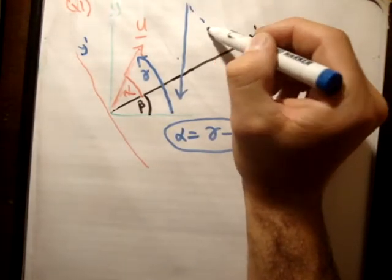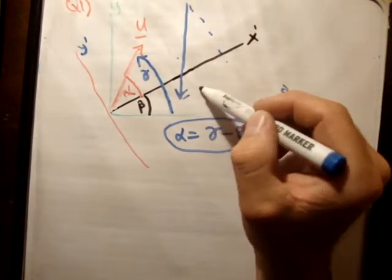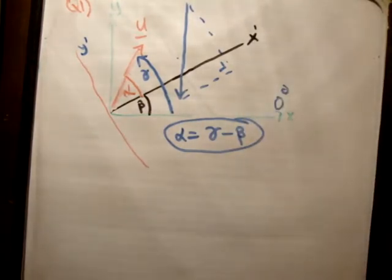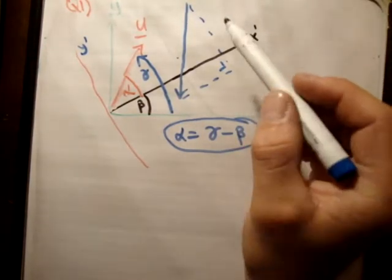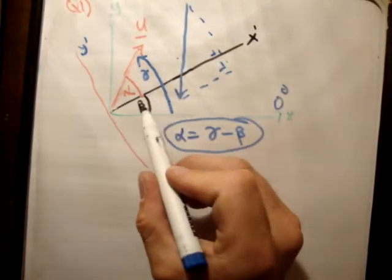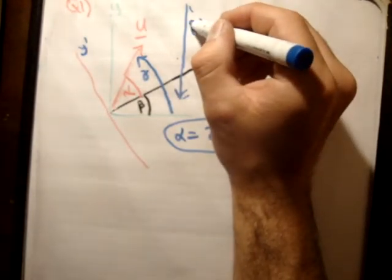So we need to resolve this vector into its component unit vectors. So we do this. That's a right angle. Now, we said before that where two angles bisect each other with a right angle, which we have here, then their angles are the same. So this angle here is beta.